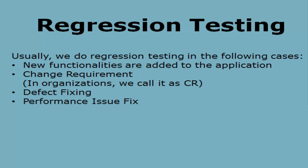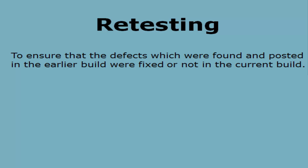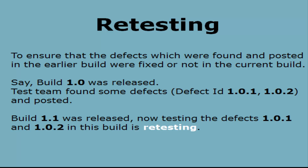Coming to retesting — retesting will be done to ensure that the defects which were found and posted in the earlier build were fixed or not in the current build. Say the first build was released, the test team found some defects and posted them. Then the second build was released. Now testing defects 1.0.1 and 1.0.2 in this new build is retesting.